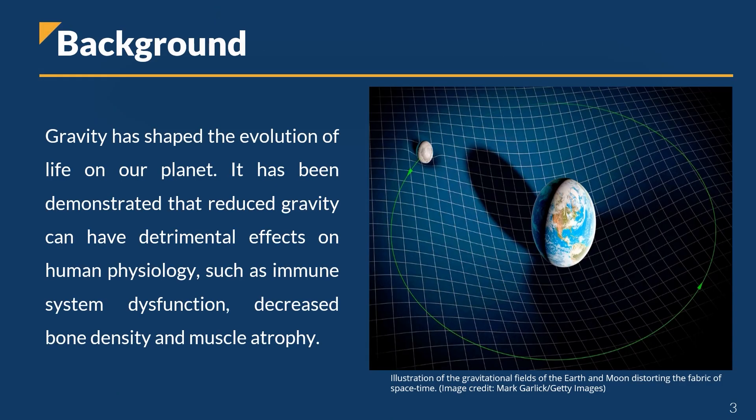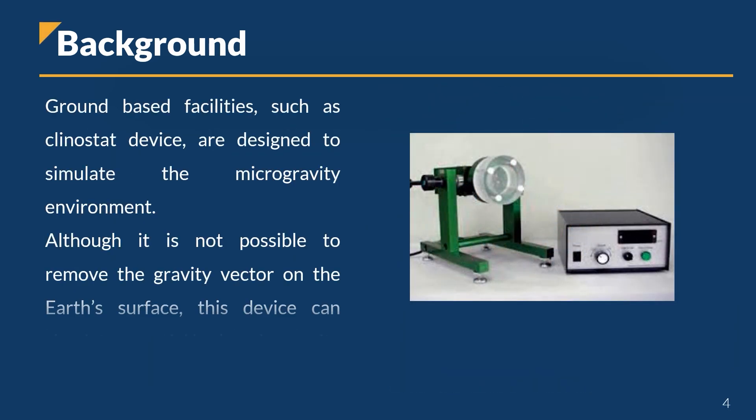Gravity has shaped the evolution of life on our planet. It has been demonstrated that reduced gravity can have detrimental effects on human physiology, such as immune system dysfunction, decreased bone density, and muscle atrophy. Ground-based facilities, such as the klinostat device, are designed to simulate the microgravity environment. Although it is not possible to remove the gravity vector on Earth's surface, this device can simulate partial reduced gravity conditions.